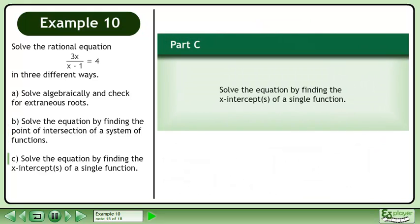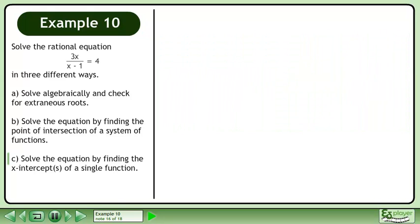In Part C, solve the equation by finding the x-intercepts of a single function. Rewrite the equation so it equals 0. This gives us 3x over x-1 minus 4 equals 0.